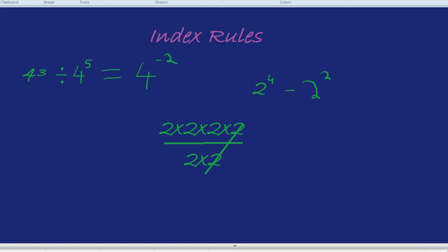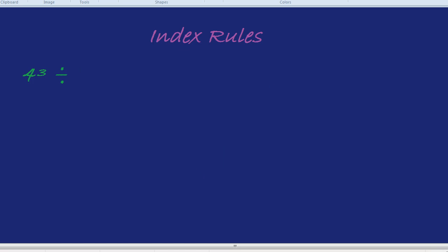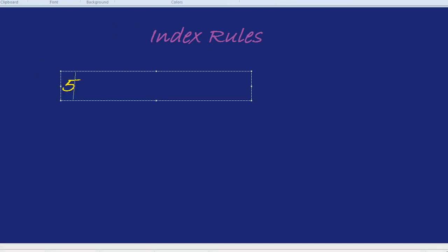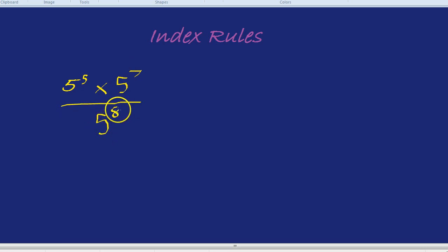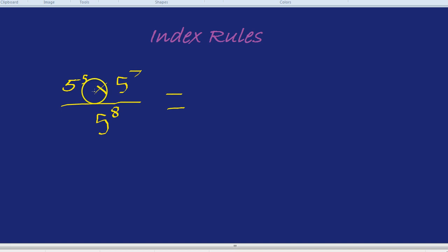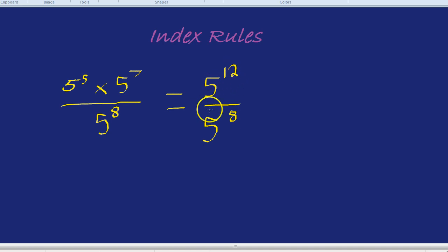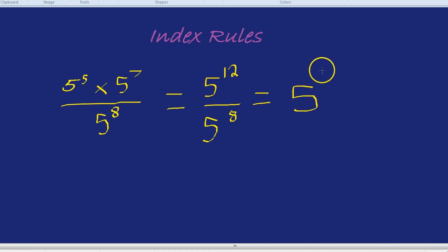Last one — we'll mix it all together. Let's do 5 to the power of 5 times by 5 to the power of 7, divided by 5 to the power of 8. That seems very tricky, but we can handle it. When multiplying, we add the little numbers: 5 to the 5 times 5 to the 7 is 5 to the 12. Then we divide by 5 to the 8, so we subtract: 12 take away 8 is 4. Our final answer is 5 to the power of 4.